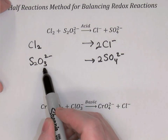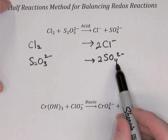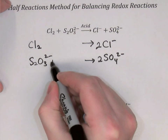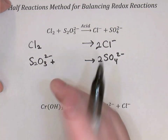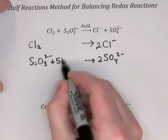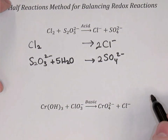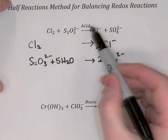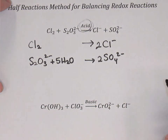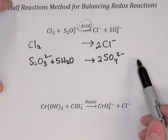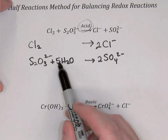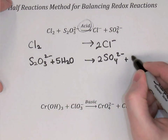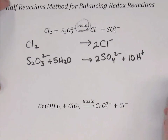The second equation has 3 oxygens on the left and 8 oxygens on the right (2×4). We need 5 more oxygens, so we add plus 5 H₂O on the left-hand side. Now balance hydrogens by adding H⁺, since the reaction is in acid solution. The first equation has no hydrogens, so it's fine. The second has 10 hydrogens on the left and none on the right, so we add plus 10 H⁺ on the right-hand side.